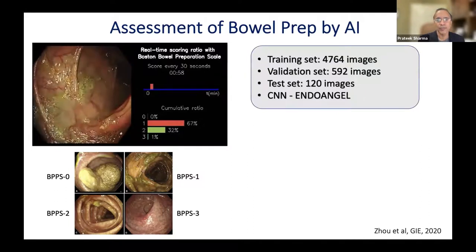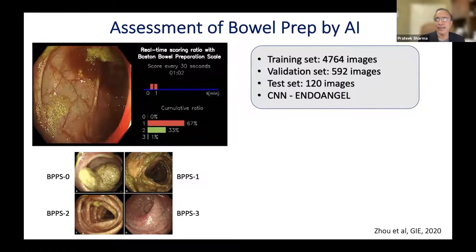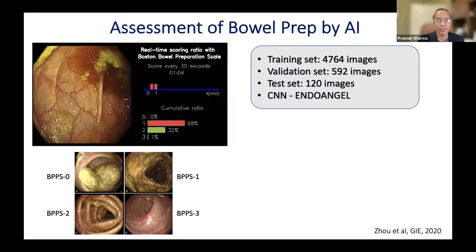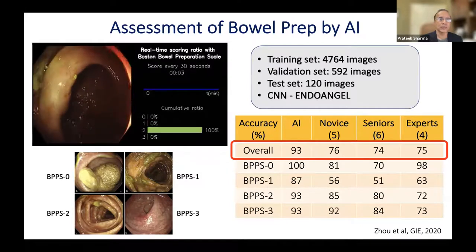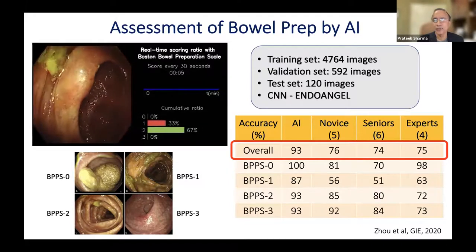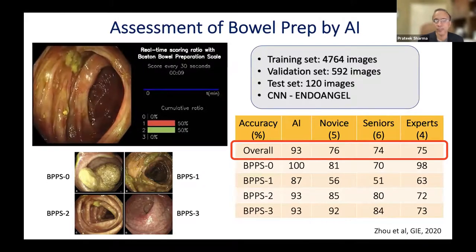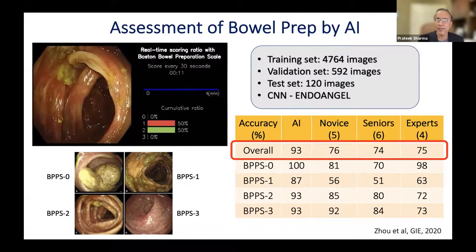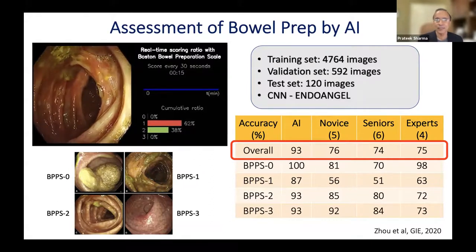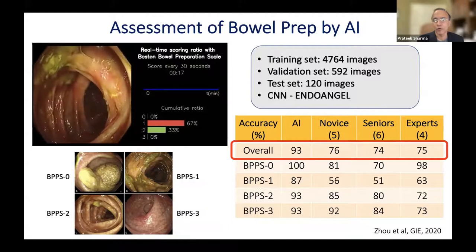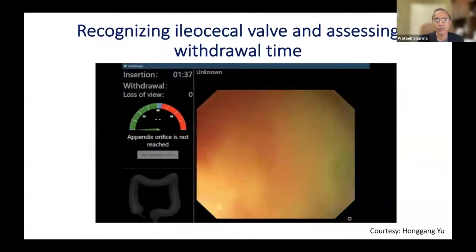For this, researchers trained and validated a CNN-based algorithm. Looking at its accuracy compared to novice endoscopists, senior endoscopists, or experts, you can see that for this repetitive, mundane task, the machine actually outperforms humans — even expert endoscopists.